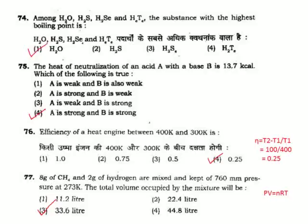Question 75: The heat of neutralization of an acid A with a base B is 13.7 kcal. This heat of neutralization value denotes that A is a strong acid and B is a strong base. Correct answer is Option 4.